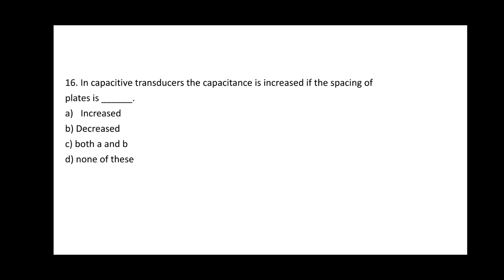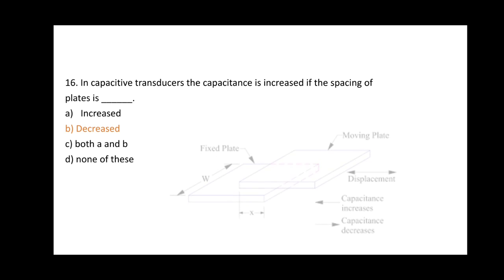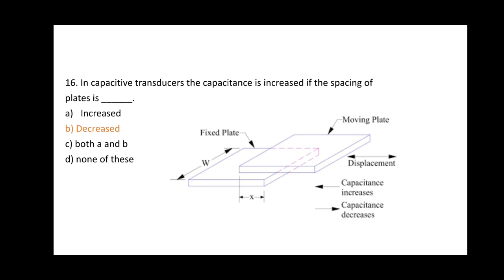Question 16: In a capacitive transducer, the capacitance is increased if the spacing of the plates is dash dash. Options: A) Increase, B) Decrease, C) Both A and B, D) None of these. The correct option is B — decrease. When the spacing of the plates is decreased, the capacitance increases. This is shown in a figure with a fixed plate and a movable plate, where displacement causes capacitance to increase as plate spacing decreases.